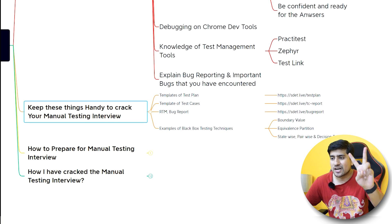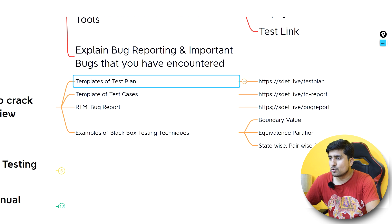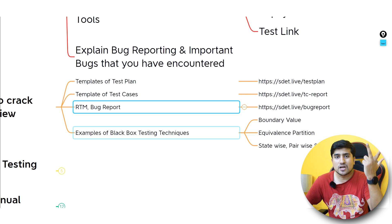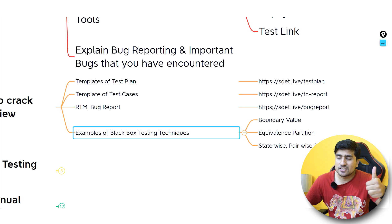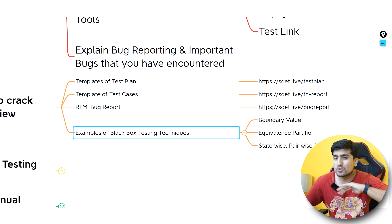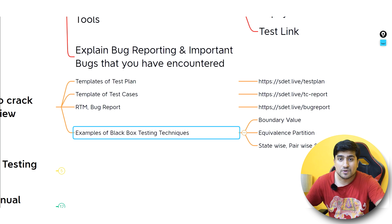The second important point is the things you need to keep handy for a manual testing interview. The most important ones are: a test plan template, test cases, bug report, and RTM. All links are provided in the description, along with different testing techniques. I have created multiple videos on test plans, test cases, bug reporting, and different types of black-box testing techniques — make sure you watch those.